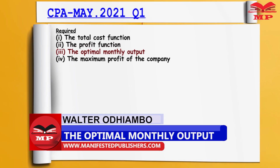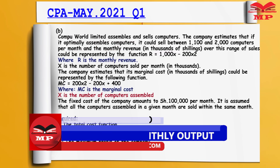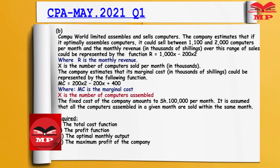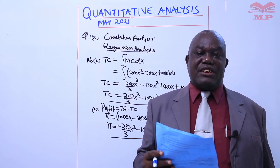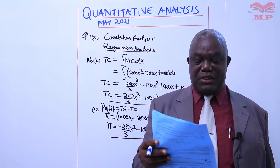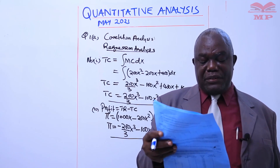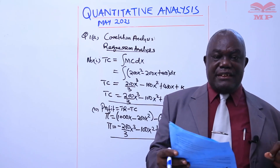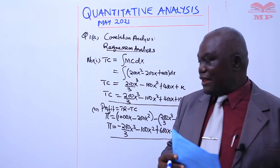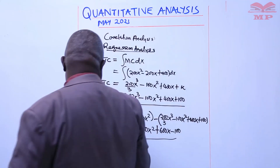In Roman numeral 3, there is a key word: optimal monthly output. What does that mean? The output or the quantity — the number of computers — that will give maximum profit. Because his business profit, by economic implication, means it has to be maximized. So optimal monthly output means the quantity that will maximize the profit.